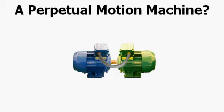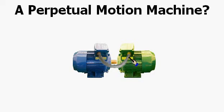Here is the perpetual motion machine we will be examining today. Notice it has an electric motor and connected to its shaft is an electric generator. Notice the conduit running from the generator back to the motor. This will provide the power from the generator to run the electric motor.